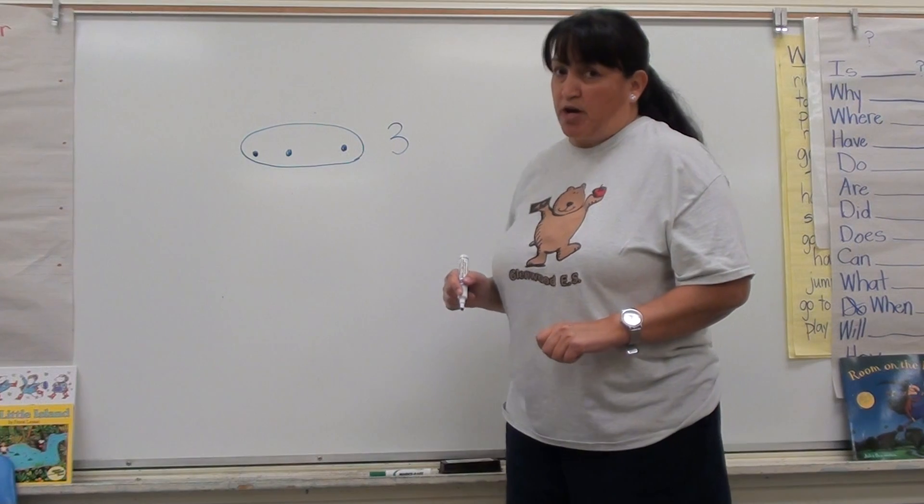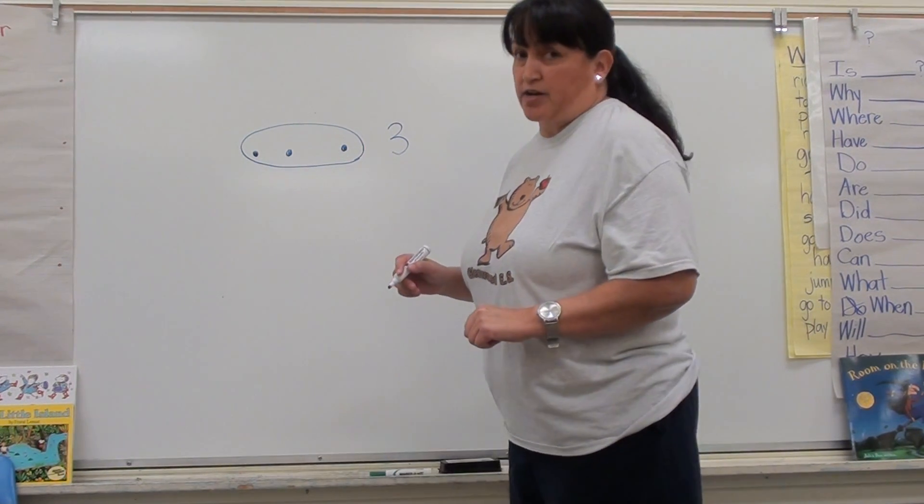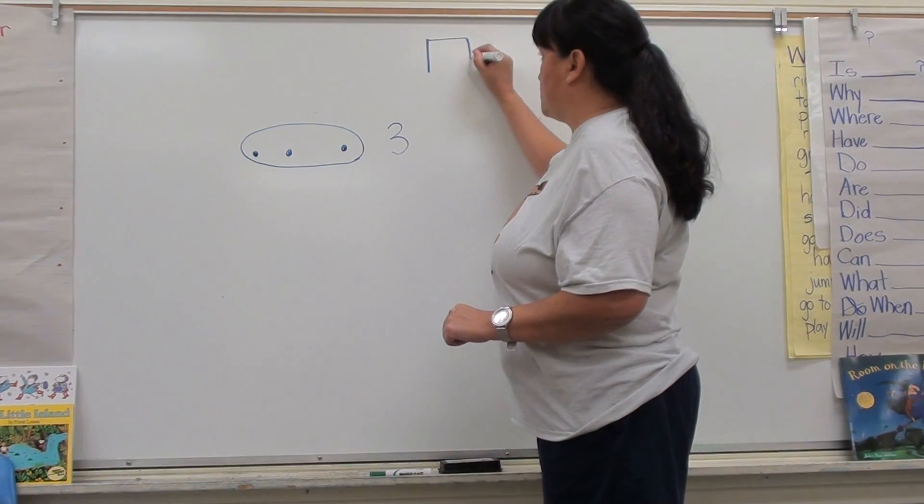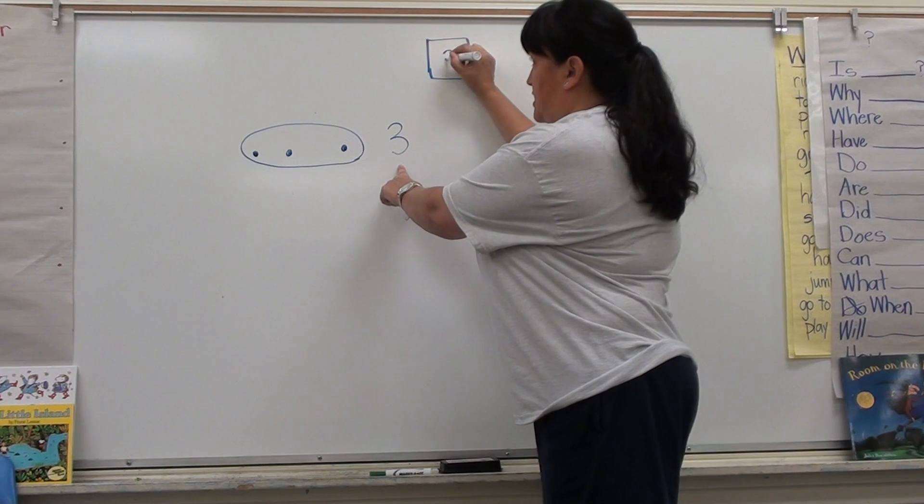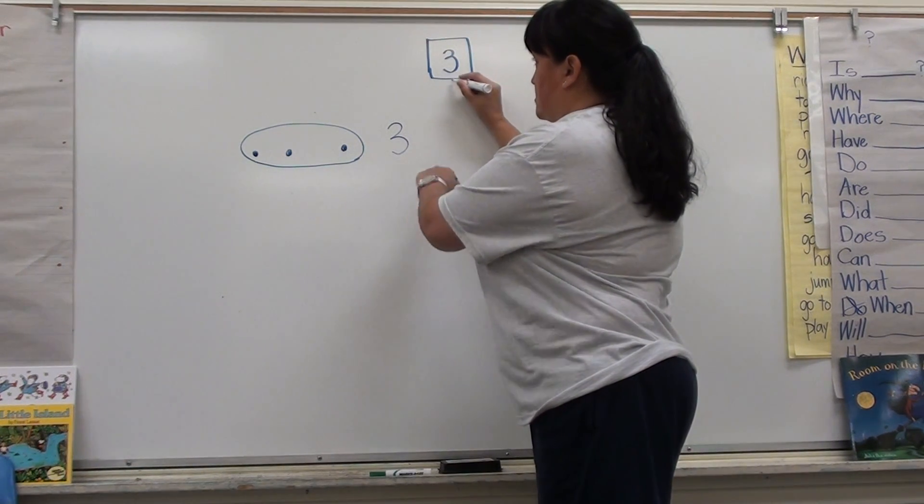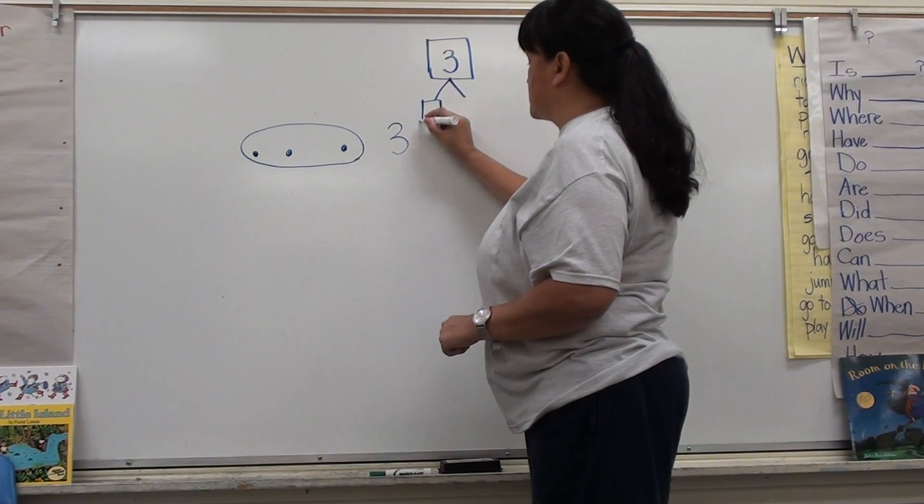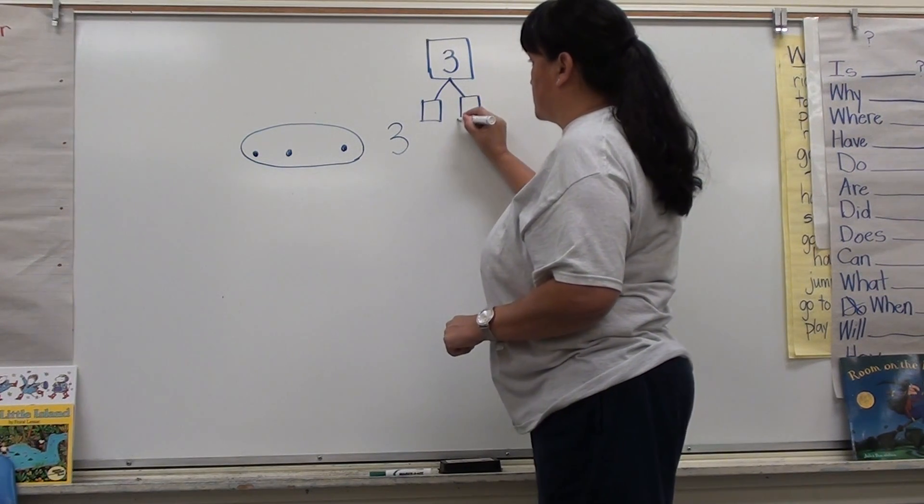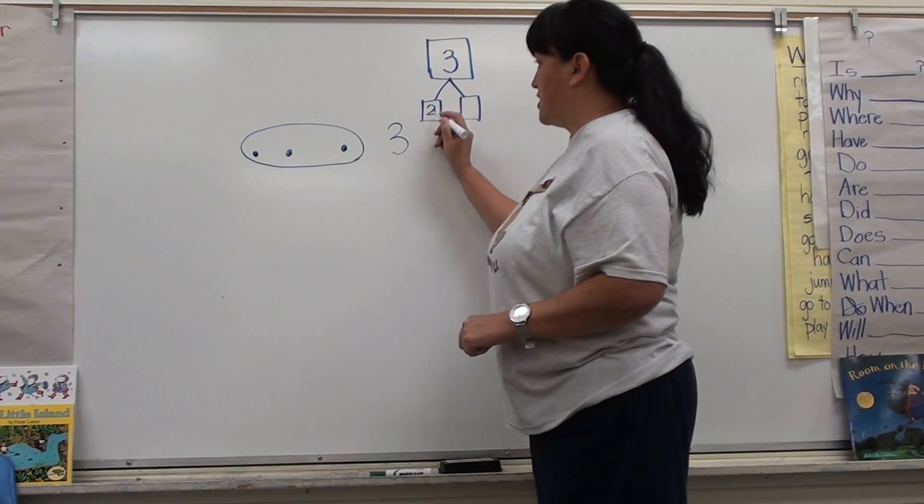In a number bond, we want to write it in a special way. We want to write our whole number in one box, so that would be three. We write our parts in smaller boxes and that would be our two and our one.